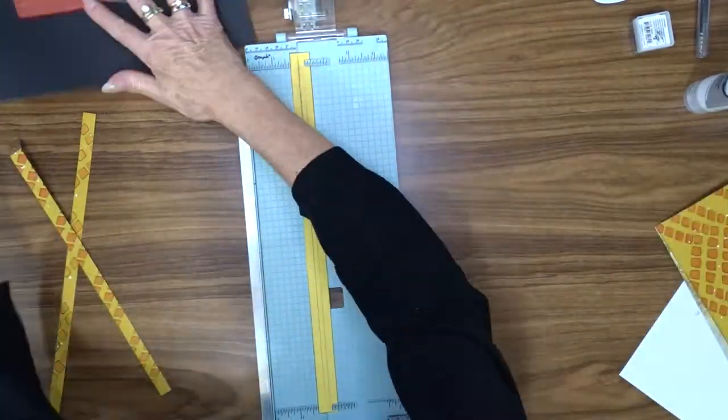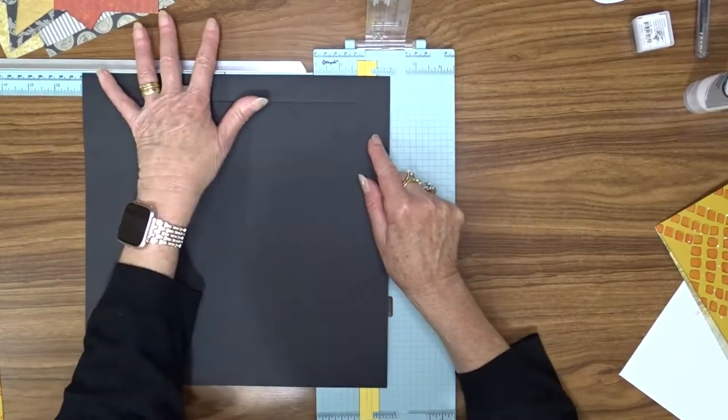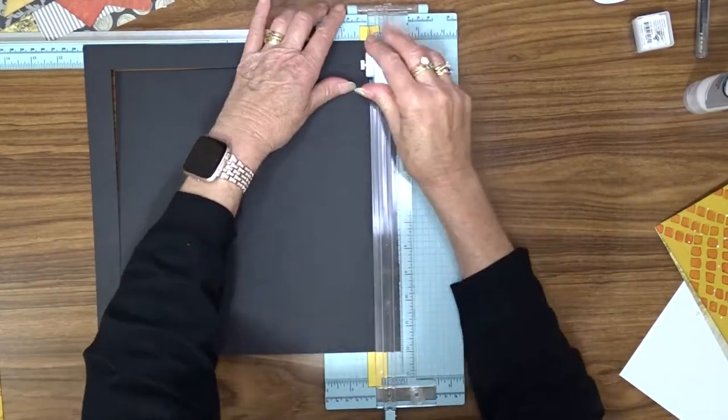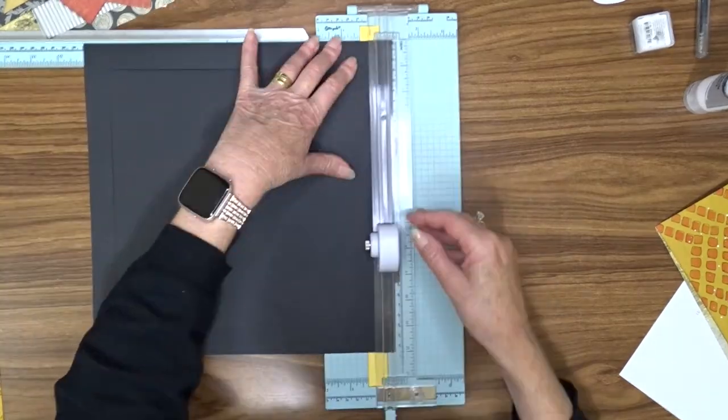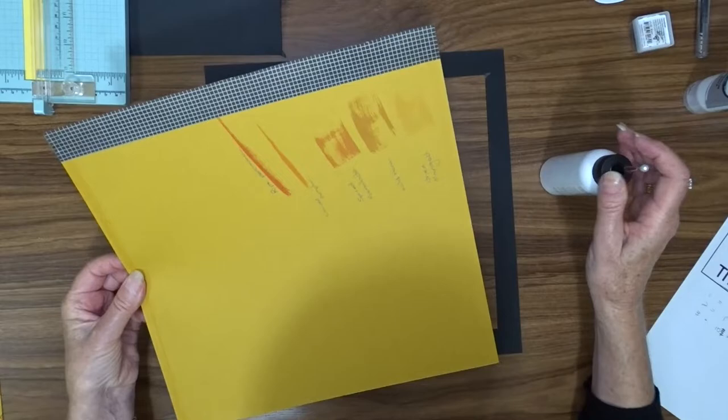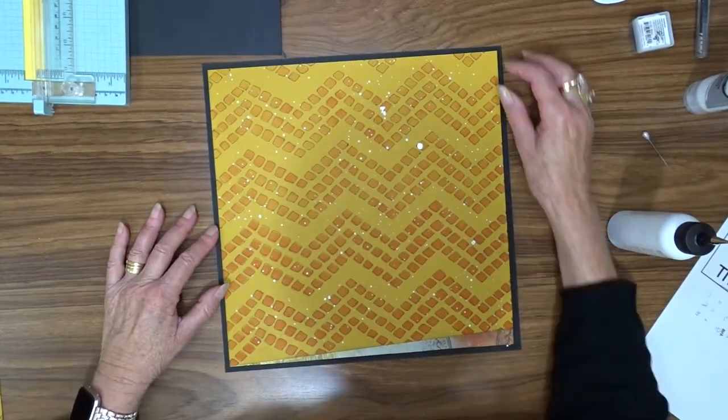To add a little bit of definition to my layout, I've decided to put a black frame around the whole thing. So I'm cutting my background cardstock down to 11 and a half inches by 11 and a half inches, and then I'm going to mat that onto a piece of black cardstock that I have taken the middle out of, just leaving a one-inch frame.